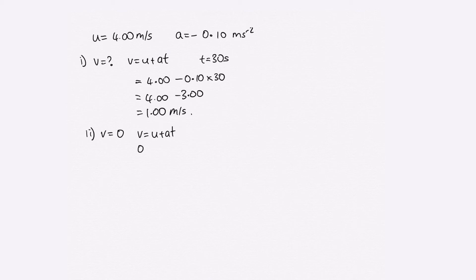We've got 0 is equal to u plus at. So rearranging this, we end up with t is equal to minus u over a. Now we can substitute in.